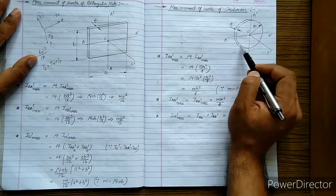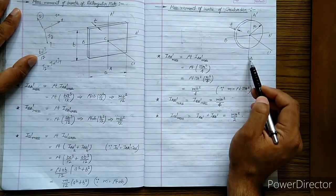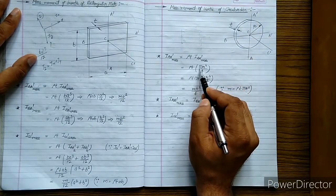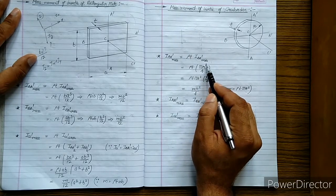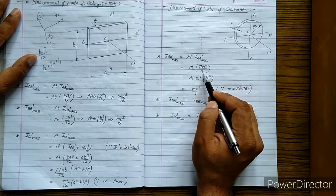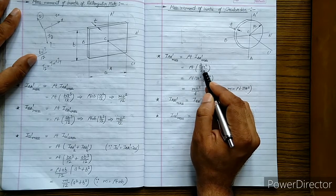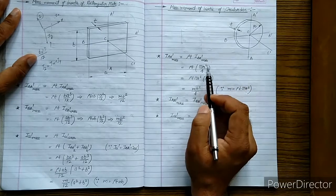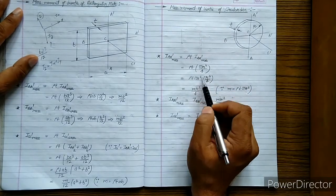We know that the area moment of inertia of any circular face about an axis in its own plane is given by πr⁴/4. You should remember this — it is the area moment of inertia of a circular area about an axis passing through its own plane, that is axis AA'.